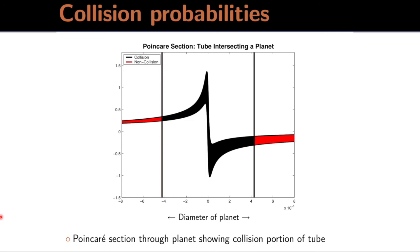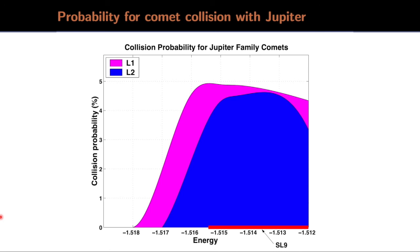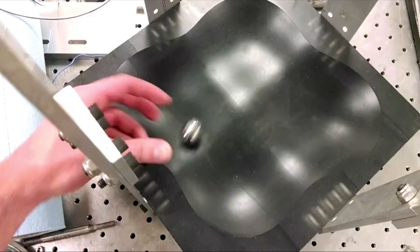We take that area and compare it to the area of the tube itself, and we can get probabilities, in this case, for collisions with Jupiter family comets with Jupiter, coming from either the L1 or L2 direction. And we've overlaid the energy range for Shoemaker-Levy 9, which happens to be in the range of highest probability. So there are systematic ways to compute these probabilities.